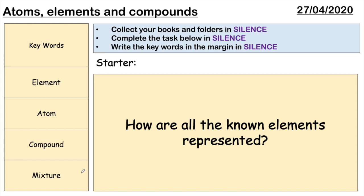Hi guys, today we're going to talk about atoms, elements and compounds. This is the first lesson in the unit atomic structure in the periodic table. I've got some key words down the left here. Don't worry if you don't understand what they mean just yet, you will by the end of today. We're going to start this off with just thinking about where would you find all the known elements, where are they represented?